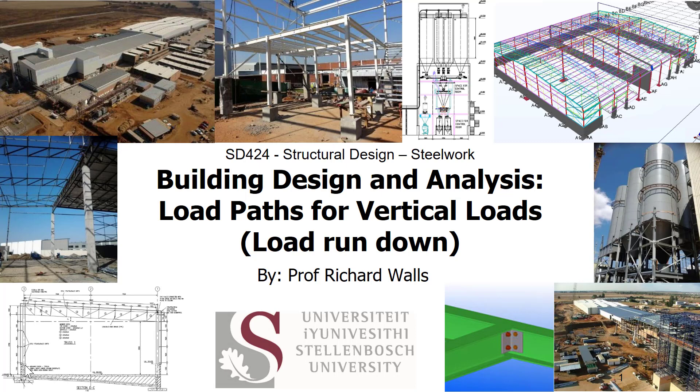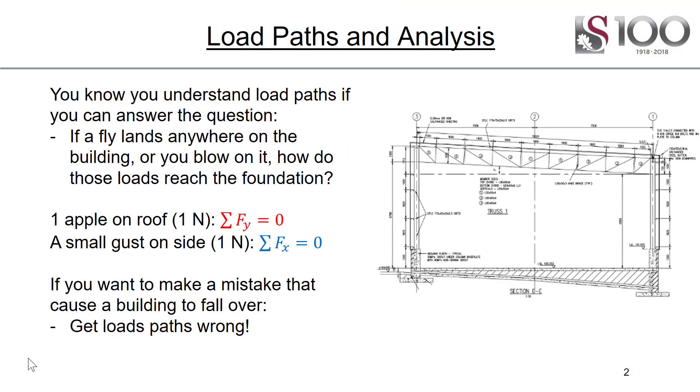So we're going to be carrying out an example on a structure. But before we do that, just think about this. You know you understand load paths if you can answer the question: if a fly lands anywhere on the building or you blow on it, how do those loads reach the foundation? Because ultimately every single load, and you normally think of heavy loads and many kilonewtons, but even the teeniest, tiniest loads has to have some load path to get from where it is to the foundations. So one apple put on the roof, ultimately that one newton will somehow end up in the different foundations and be dissipated into your boundary.